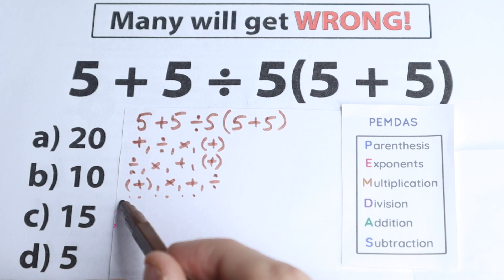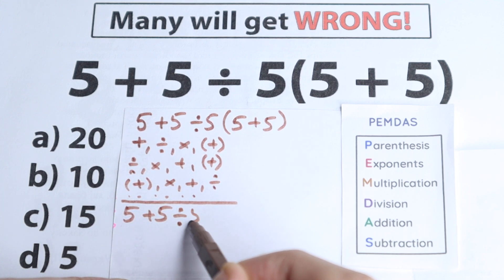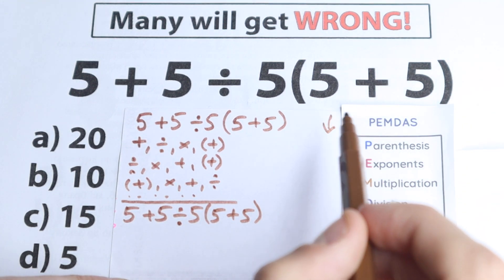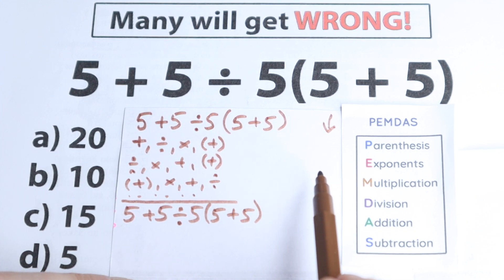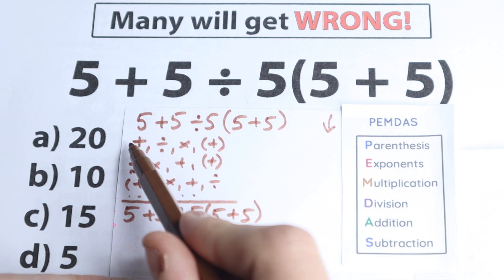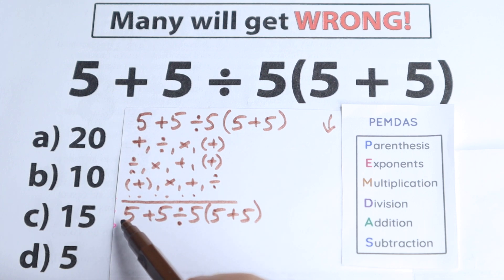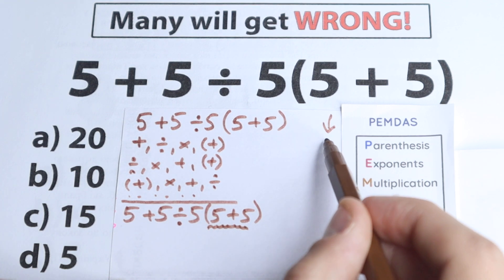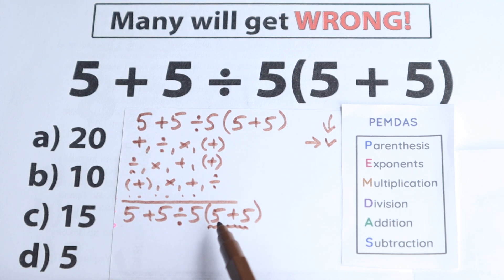Let's rewrite this question. So we have 5, plus 5 divided by 5, and times 5 plus 5 in parentheses. PEMDAS works from the top to the bottom, and we will check this combination. The first step is parentheses. We cannot start from addition, division, or multiplication — we need to start from parentheses. Looking closely at our question, we don't have parentheses on the left-hand side or in the middle, but we have them on the right-hand side, so this is our first step.